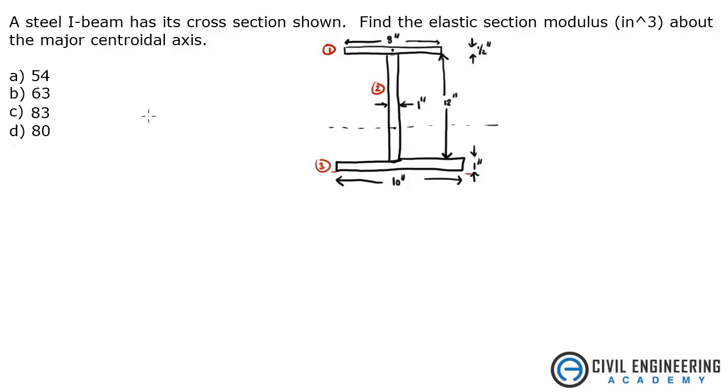The steel I-beam has its cross section shown. Find the elastic section modulus in inches cubed about the major centroid axis. So the first thing we need to do is establish a coordinate system. I'm going to say the bottom of this is my x-axis. So everything will be measured from that x-axis.